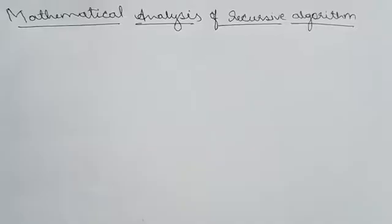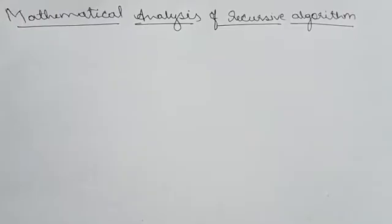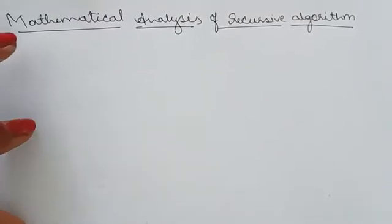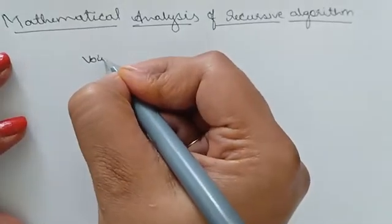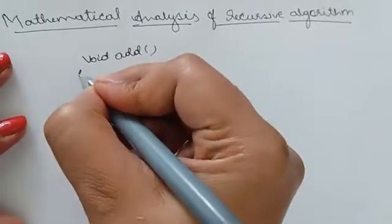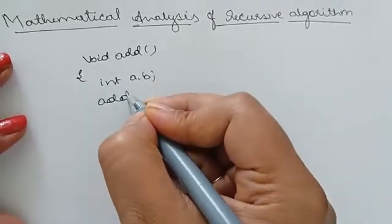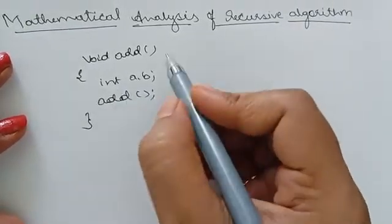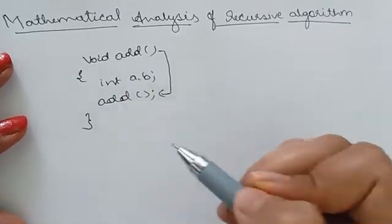In the last two videos we saw the mathematical analysis of non-recursive algorithms. Today we are going with mathematical analysis of recursive algorithms. A recursive algorithm is one which calls itself — for example, a function 'void add' that calls itself inside the function. This kind of algorithm is called a recursive algorithm.